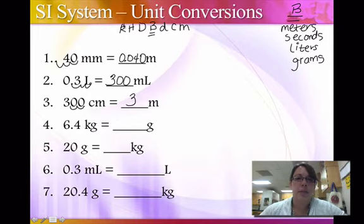Kilograms to grams is one, two, three jumps. So you go one, two, three jumps. So 6,400.